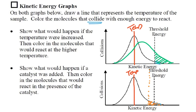The green curve represents the new higher temperature — the green temperature is greater than the red temperature. Even though it's a lower curve, it's more to the right, which means greater energy. And that's the quick check.